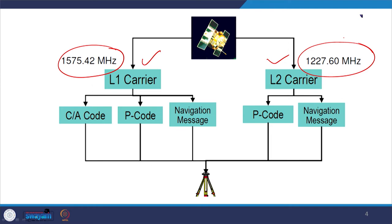The L1 carrier gives us the course acquisition code — the C/A code — the precise code (P code), and navigational messages. Three codes and messages are there, while the L2 carrier gives us the precision code and the navigational message. It depends whether we are working on a dual-frequency GPS receiver or a single-frequency GPS receiver.